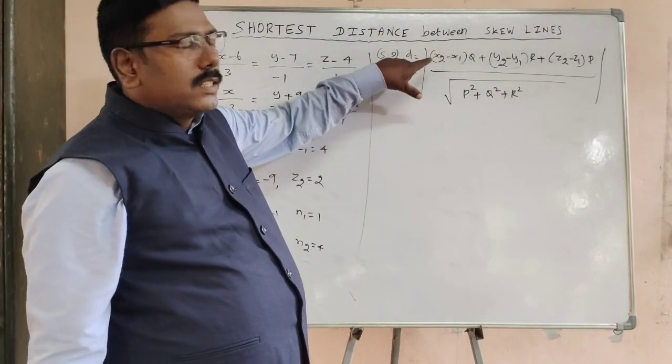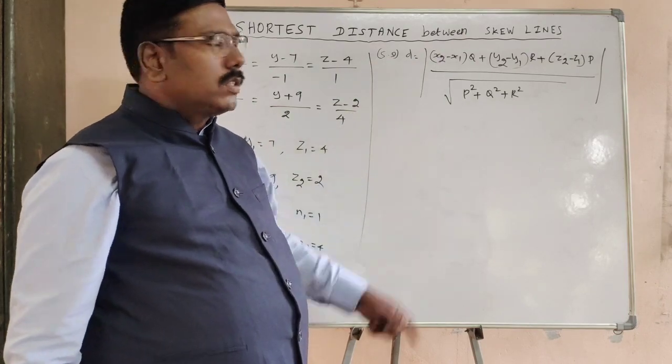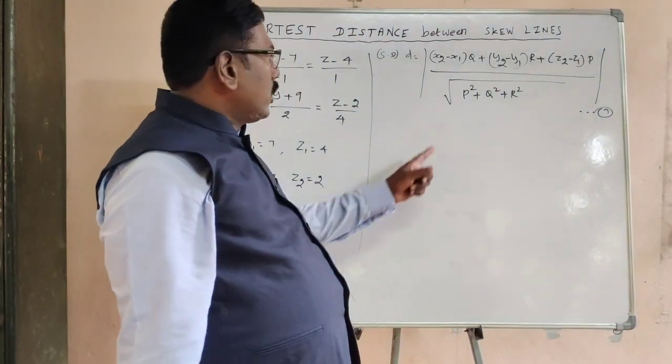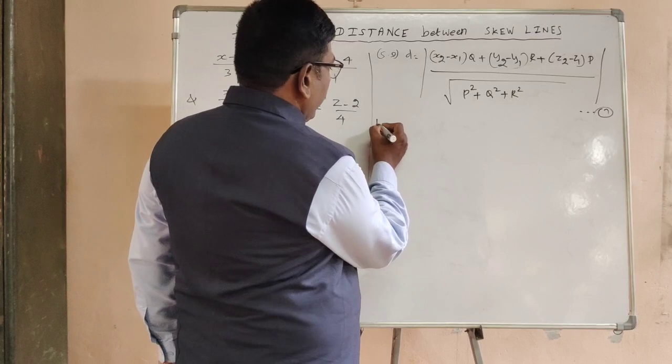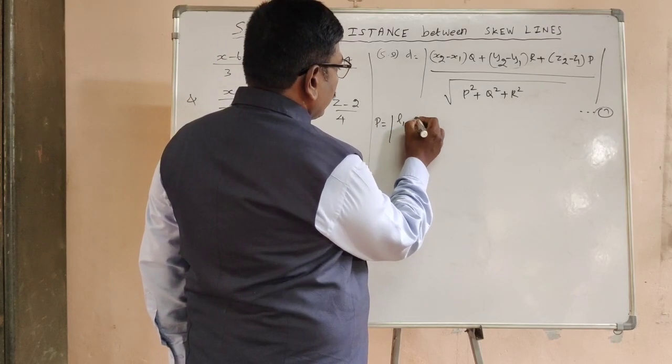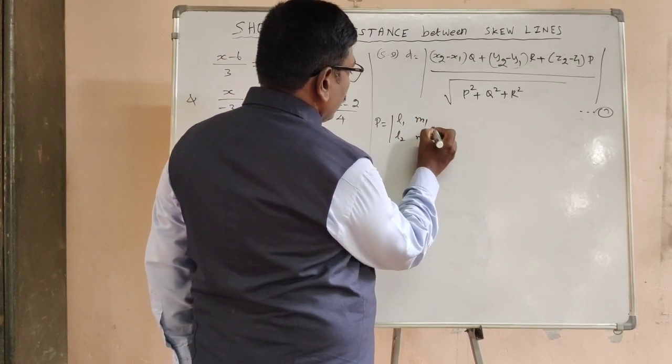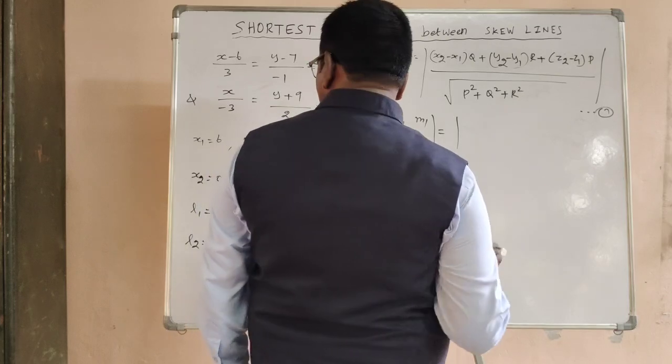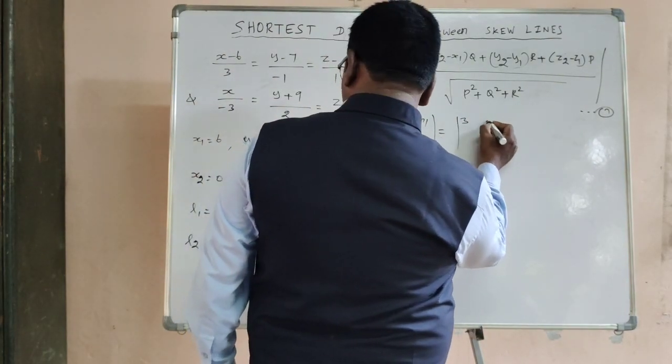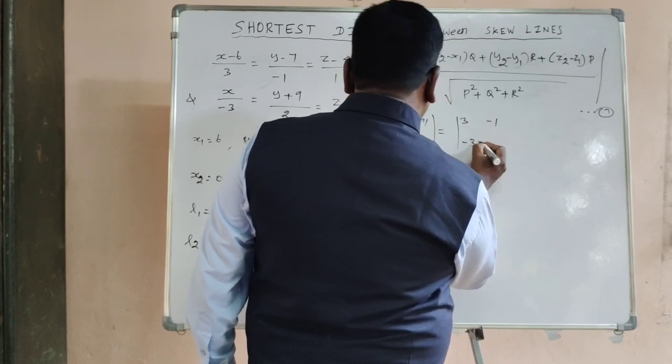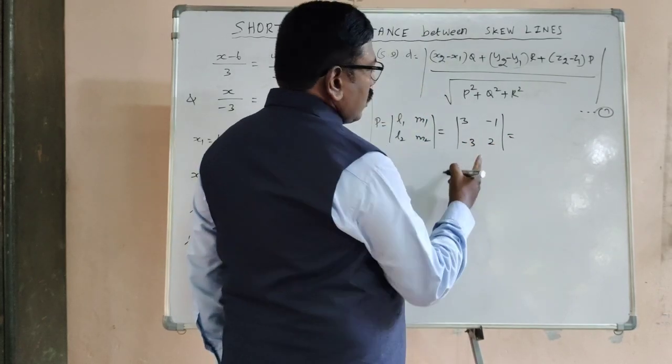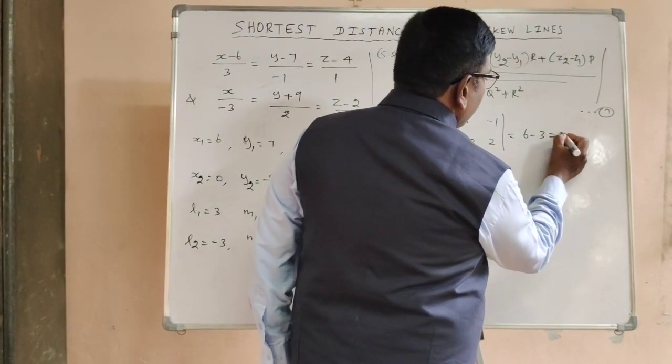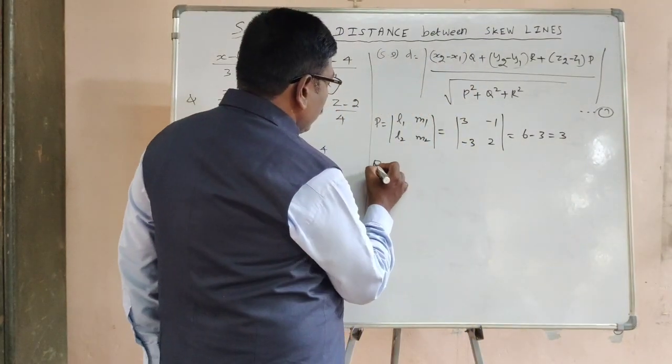The formula for shortest distance is this. Now we are going to substitute all the values in equation number one. We have to find P, Q, R. So P equals determinant value of L1, M1, L2, M2. L1 is 3, M1 is minus 1, L2 is minus 3, M2 is 2. So 3 into 2 is 6, minus minus 3 into minus 1, so minus 3, it is 3.